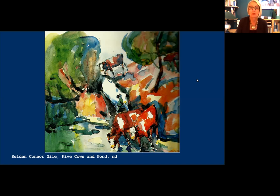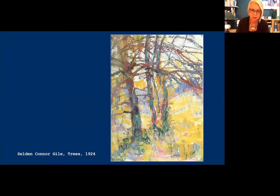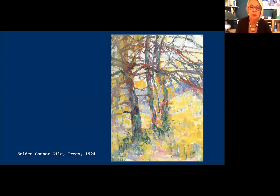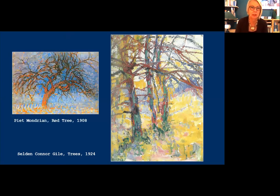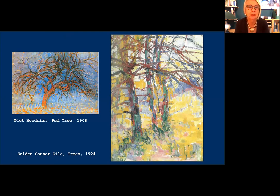I love this tree study of Gile's, which prompted Wayne Thiebaud to say: 'Some of Gile's paintings of trees are a lot like Mondrian's, where the rhythm of the branches within the painting, the placement of them, begins to make their own kind of orchestration. They just border on the symbolic.' I am absolutely positive that Gile would not have had any inclination of what Piet Mondrian was doing at that time.